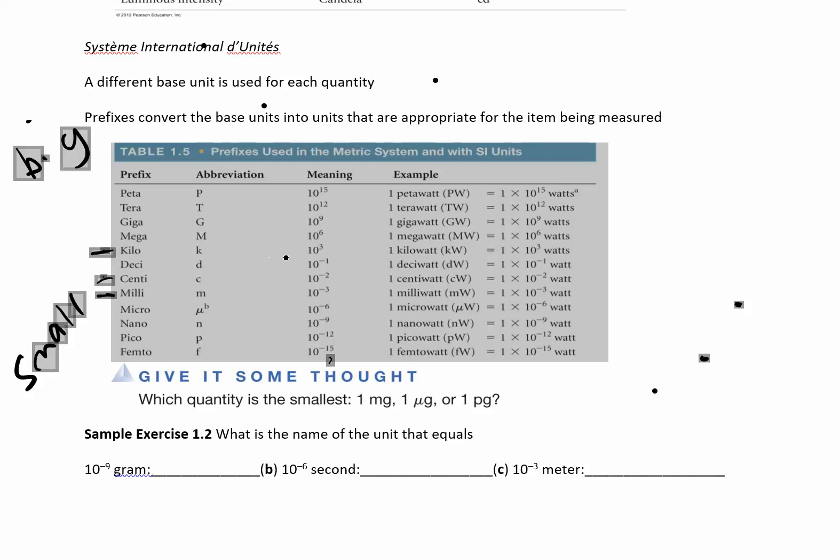A kilometer is a thousand meters in one kilometer, that sort of thing. I have a scale on the next page. Let's see how we can apply these. We have 10 to the negative 9 grams, that's the same as a nanogram. 10 to the negative 6 seconds, that's a microsecond, and 10 to the negative 3 meters is a millimeter.